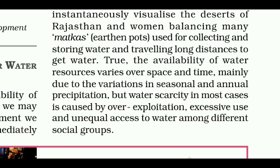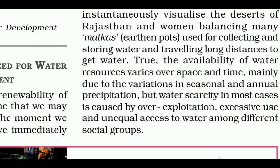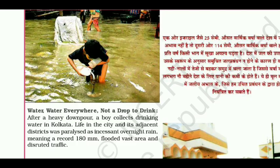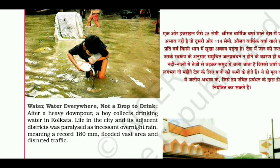But water scarcity in most cases is caused by over-exploitation, excessive use, and unequal access to water among different social groups. As illustrated by the image 'water water everywhere, not a drop to drink' — after a heavy downpour, a boy collects drinking water in Kolkata, where life in the city was paralyzed as incessant overnight rain measuring a record 180 mm flooded vast areas and disrupted traffic.